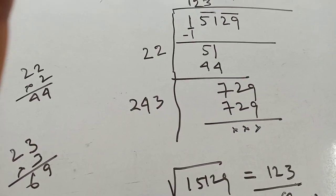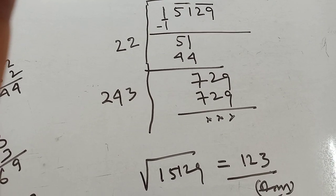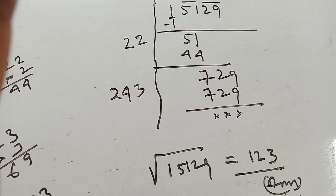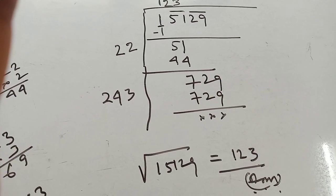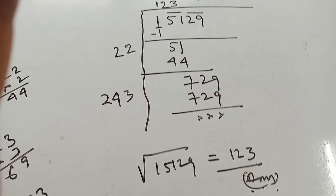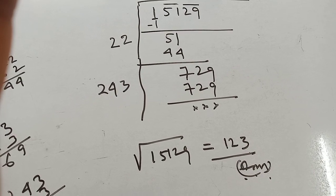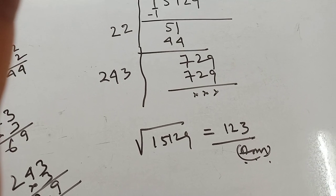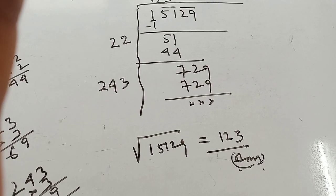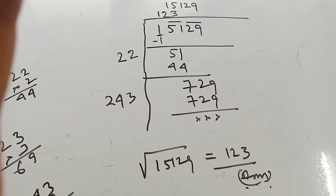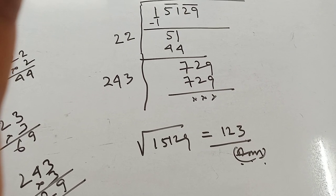For any number, first make pairs from the right hand side. If there is one unpaired digit, see how many times it goes into itself — one times one is one, subtract. Bring down 51: two times goes, multiply 22 by 2 equals 44. 51 minus 44 equals 7. Bring down 29. Double 12 to get 24, place a number beside 24.